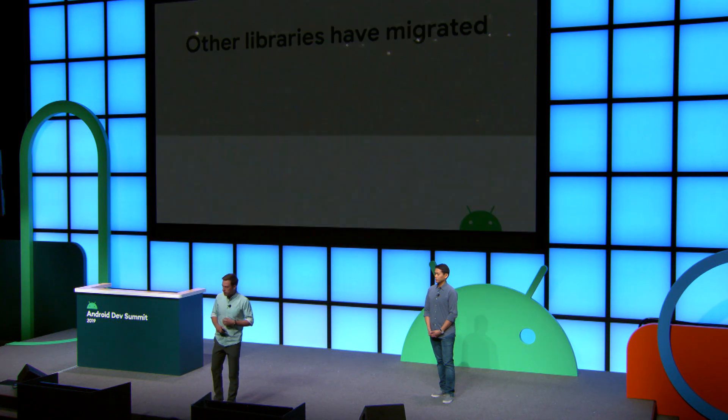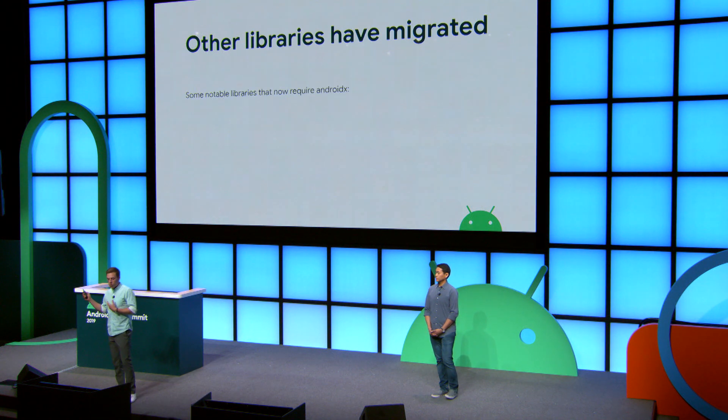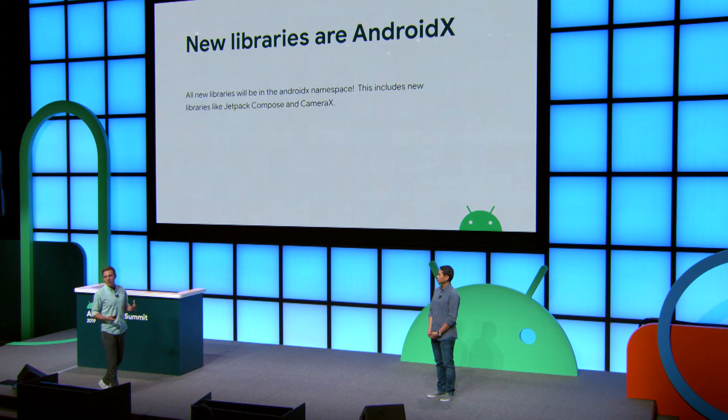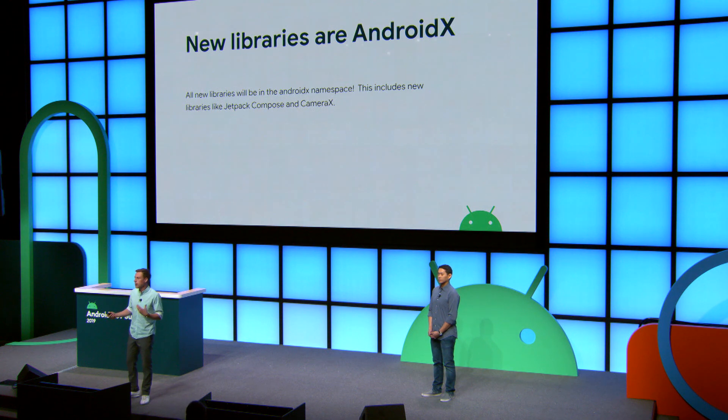Third, some other libraries have migrated to the AndroidX namespace, including Google Play Services, Firebase, Butterknife, Mockito2 in some cases, and SQLDelight. The final thing is that all new libraries are coming out in AndroidX. Things like Jetpack Compose or CameraX will be in the AndroidX namespace, so migrating to AndroidX is a precursor.